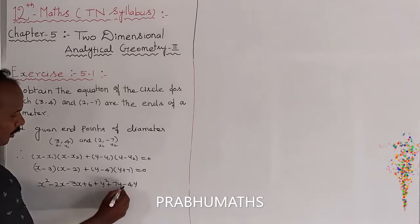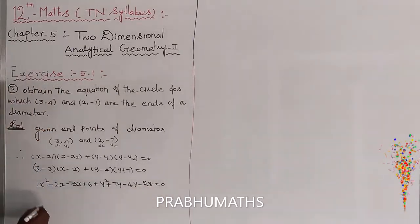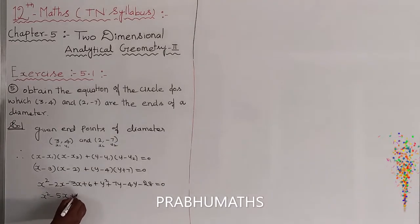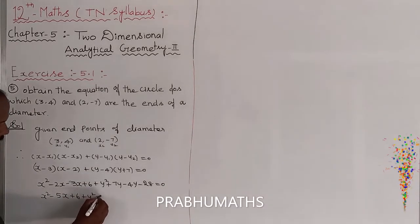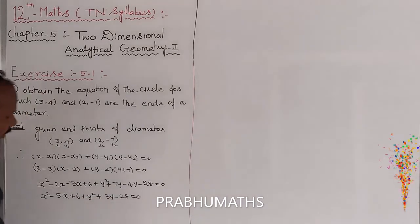This one plus 7y minus 4y minus 28 equals 0. The first one: x square minus 5x plus 6 plus y square plus 3y minus 28 equals 0.